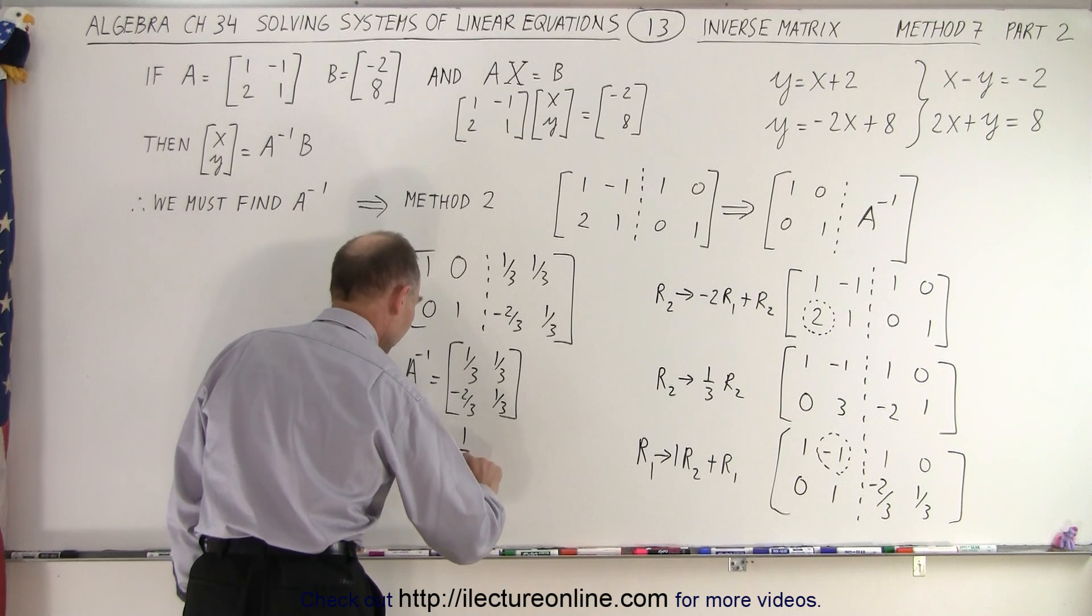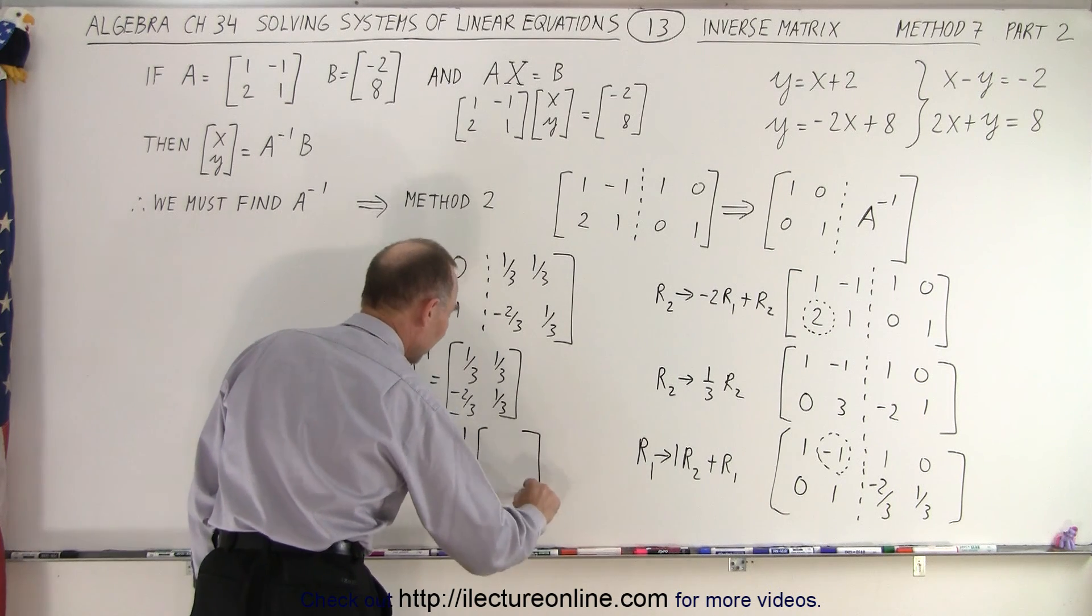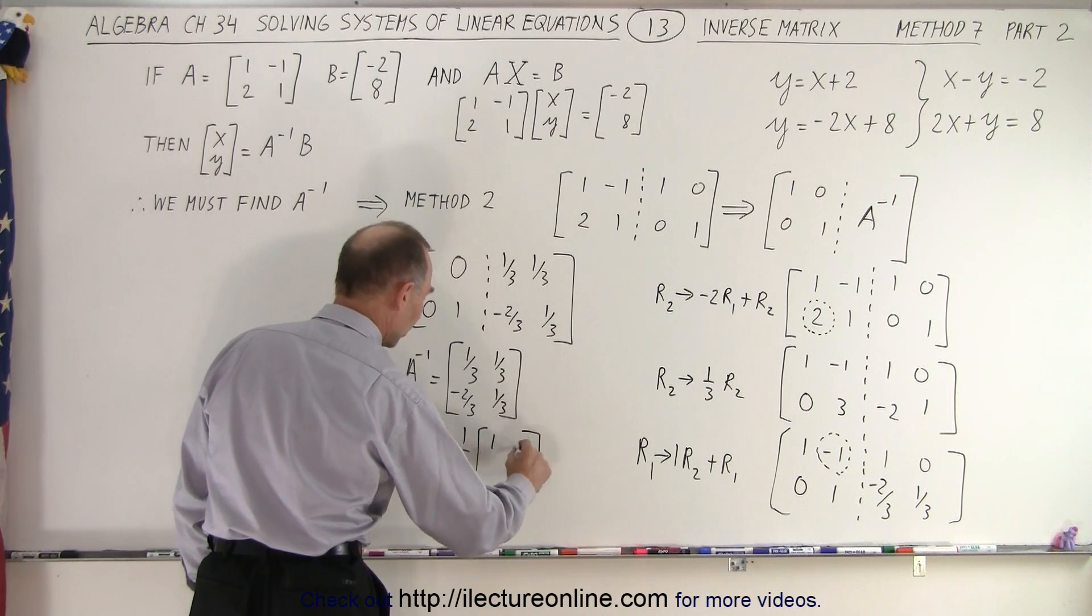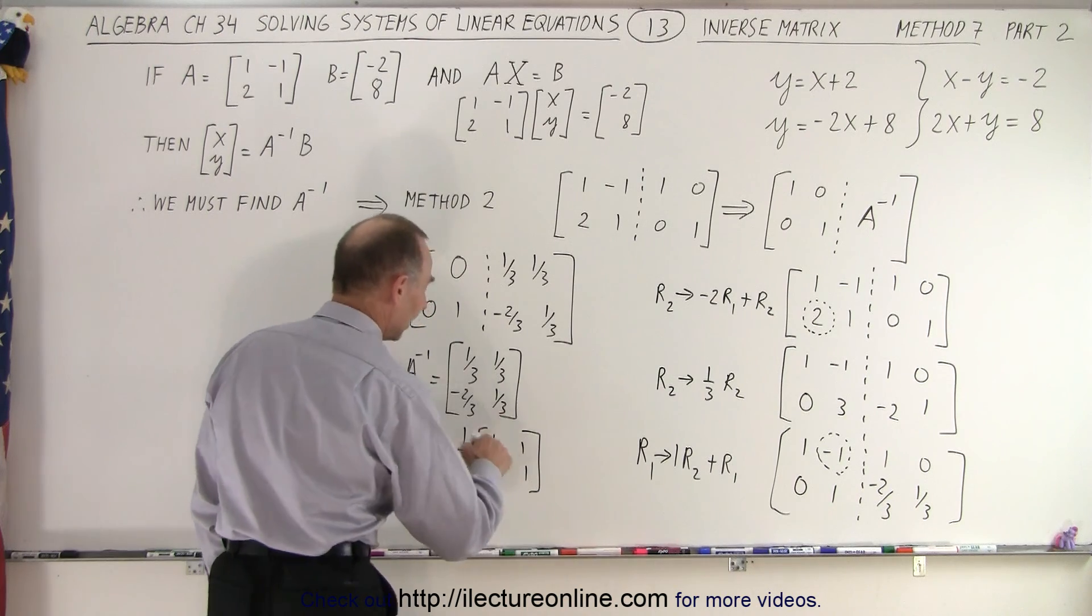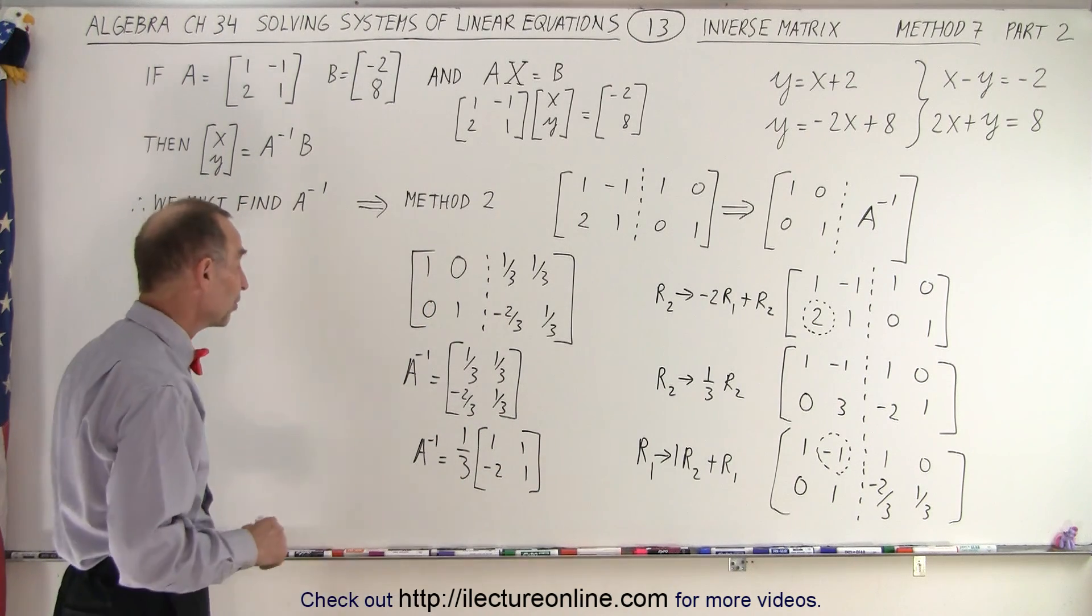We can pull out a 1 third, so we can also say that the inverse matrix of A is equal to 1 third multiplied times, and what we have left is the numerators, 1, 1, negative 2, and 1. And again, remember, that was the other form of the inverse matrix.